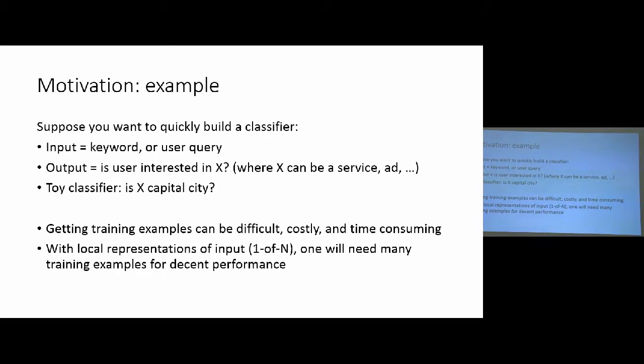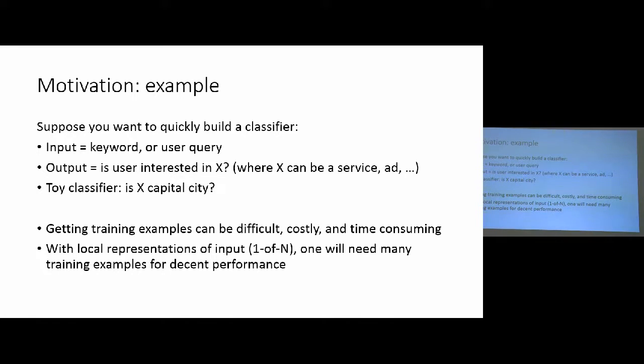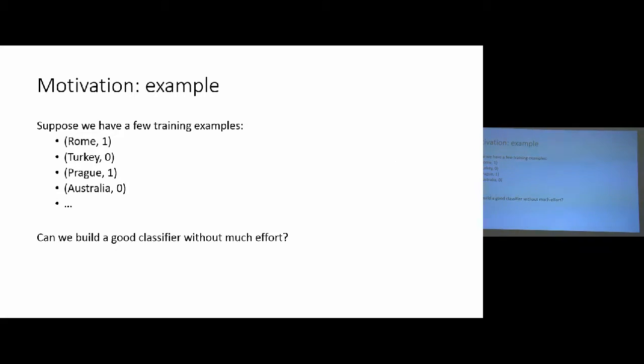With the local representations, you will need many training examples and the system can actually memorize easily the answers. For example, if you will just show to the system training data of this type that you will say that Rome and Prague are capital cities, while Turkey and Australia are not. You can have plenty of words of this type and some of them can be labeled as capital cities, some of them not. If you will train just, say, for example, a linear SVM or logistic regression on top of such one-hot N representations, then the system will not generalize at all.